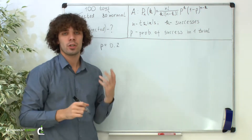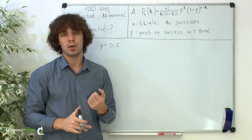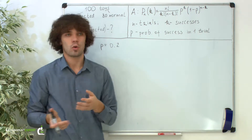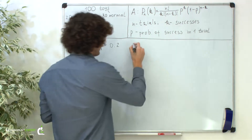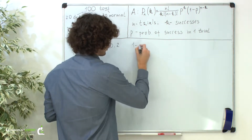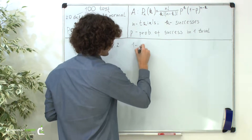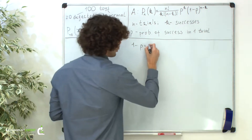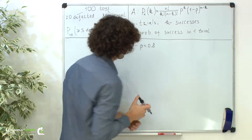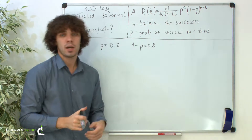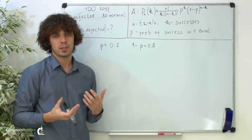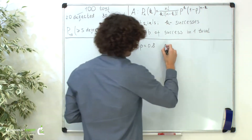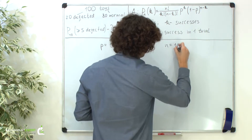As there are only two possible outcomes of the test — the toy can be either defected or normal — then the probability of failure, which is getting a normal toy, is 1 minus p and equals 0.8. We take 10 toys, so the total number of trials n equals 10.